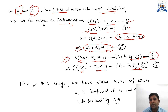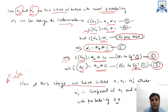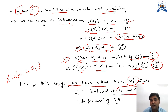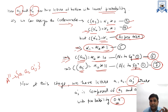Now we have a new alphabet A double dash with three letters: A1, A2, and A3 dash. A3 dash is the combination of A3 and A4 dash. The probability of A3 dash is 0.2 + 0.4 = 0.4. At this stage we have three letters: A1, A2, A3 dash, with probability of A3 dash equal to 0.4.